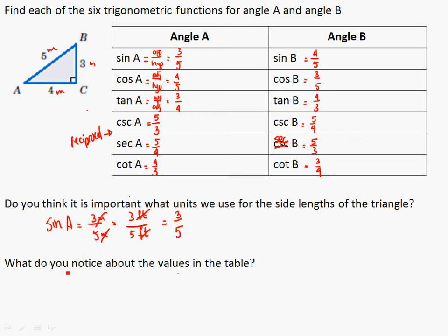Sine and cosine will always be less than 1. Tangent and cotangent don't follow that rule — here the tangent is 3 over 4, less than 1, but from angle B the tangent was 4 over 3, which is more than 1. So that constraint doesn't apply to tangent or cotangent. Flipping something greater than 1 makes it less than 1 and vice versa.